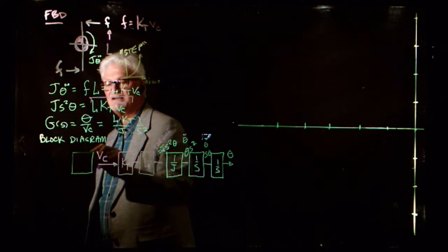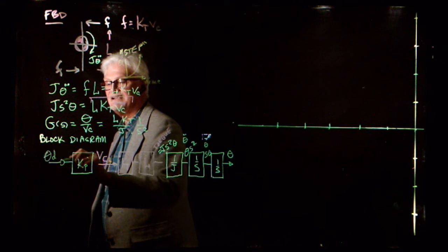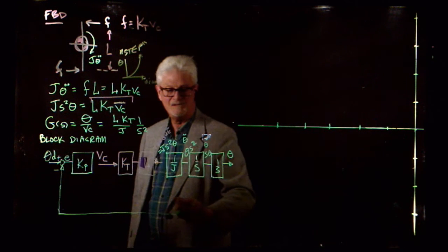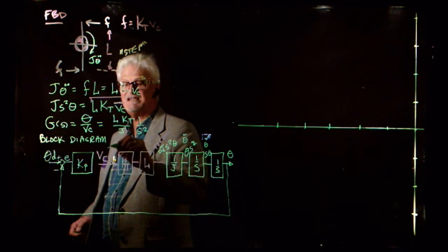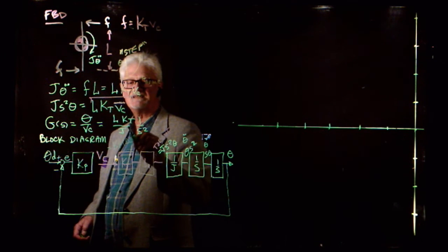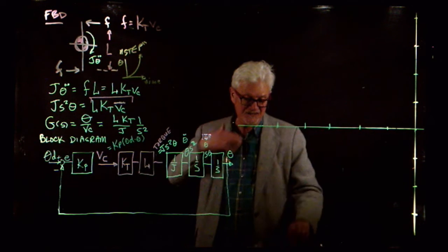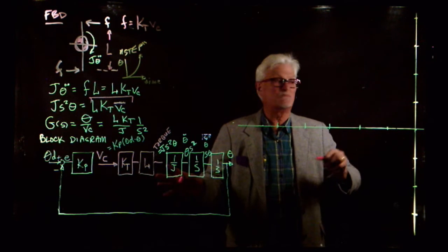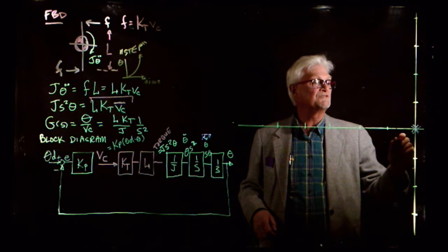We learned that the best control law to start with is to put a K_P — a proportional gain — where this is the desired theta, this is the error, plus and minus. That's a controller that works almost all the time, where V_C equals K_P times (theta_desired minus theta). Does that work for this system?